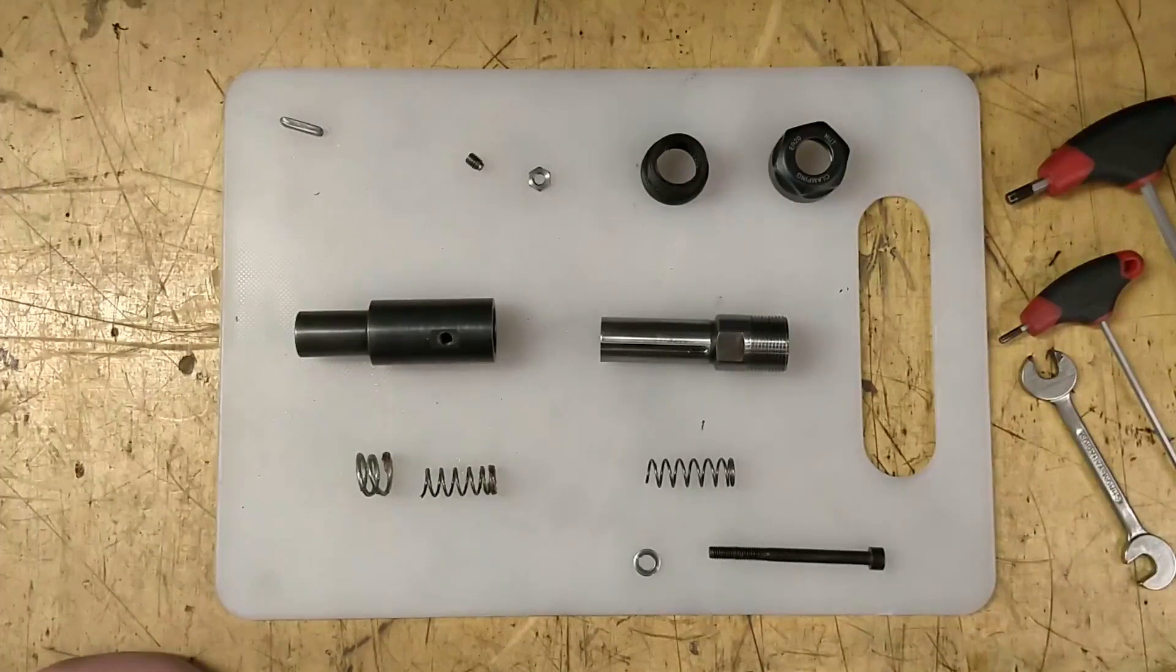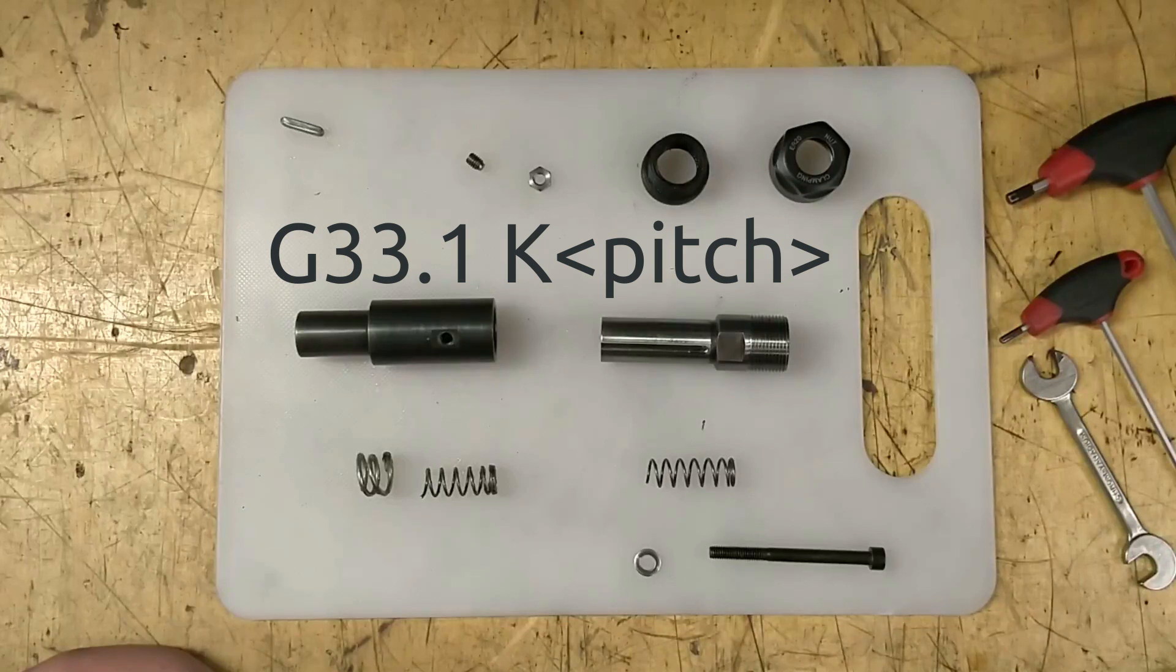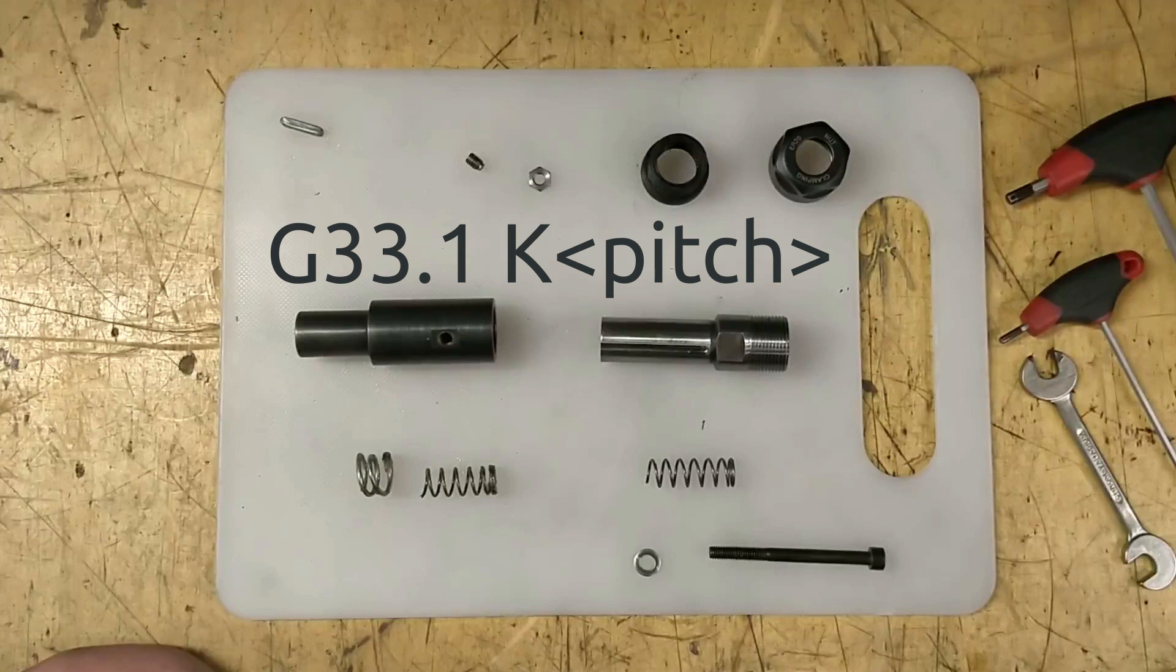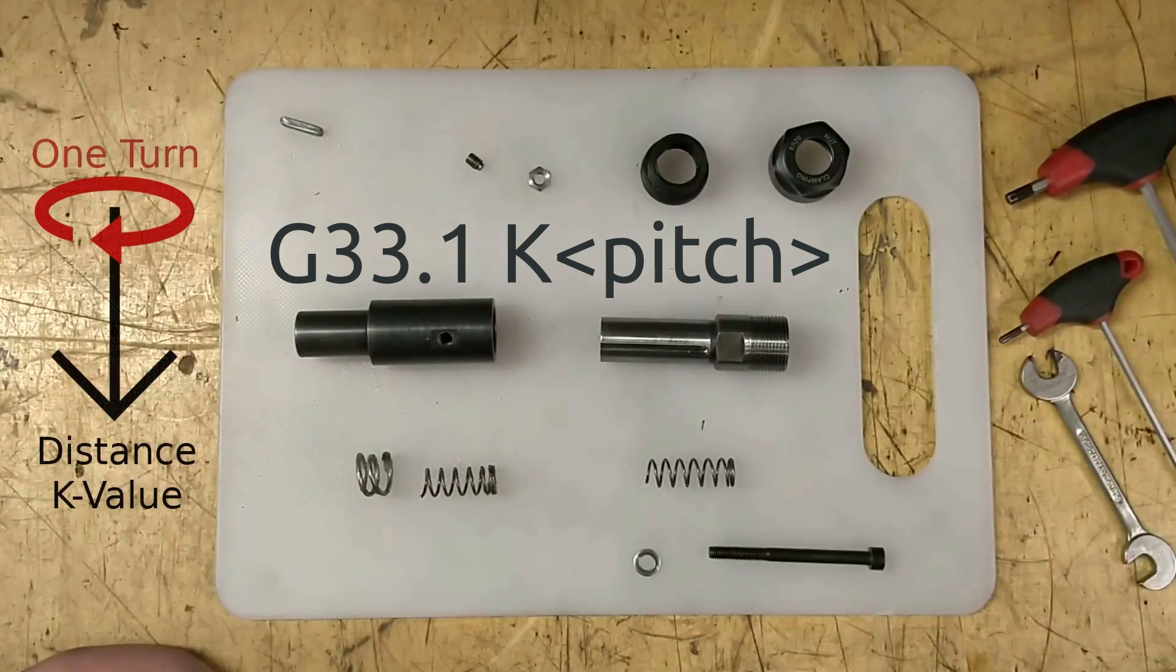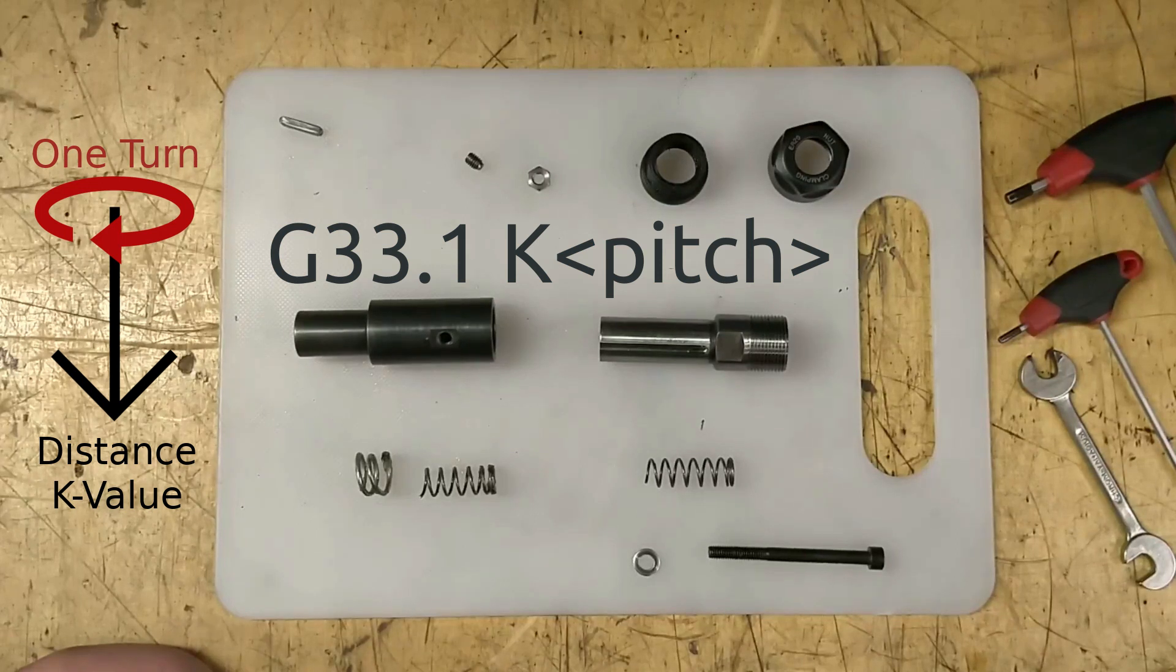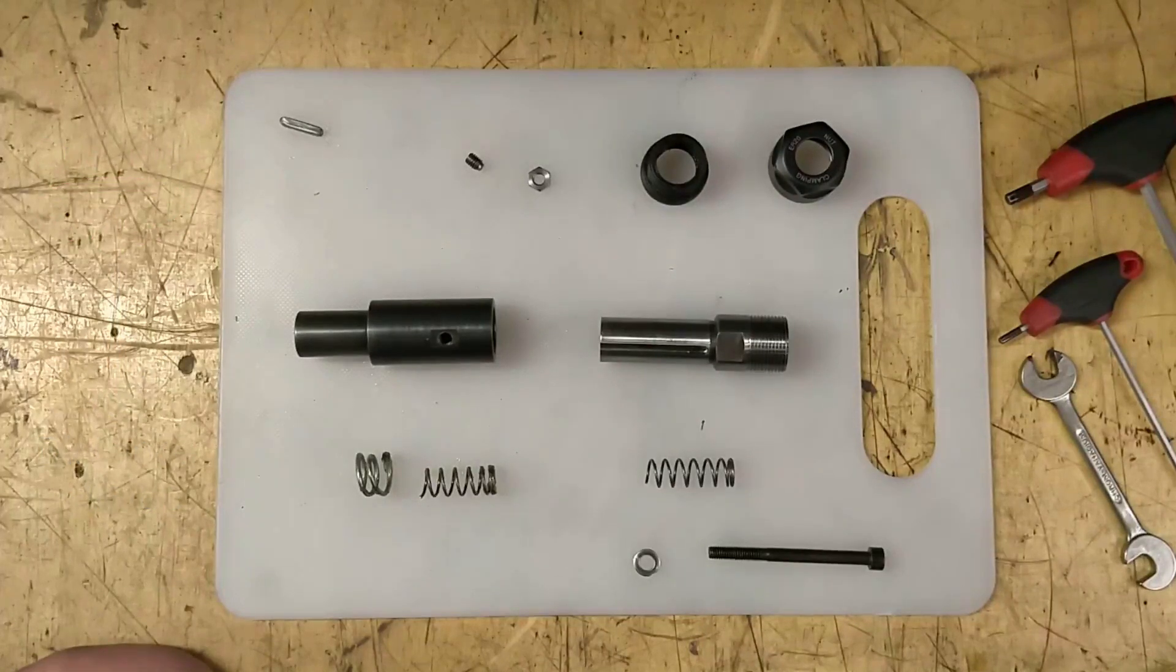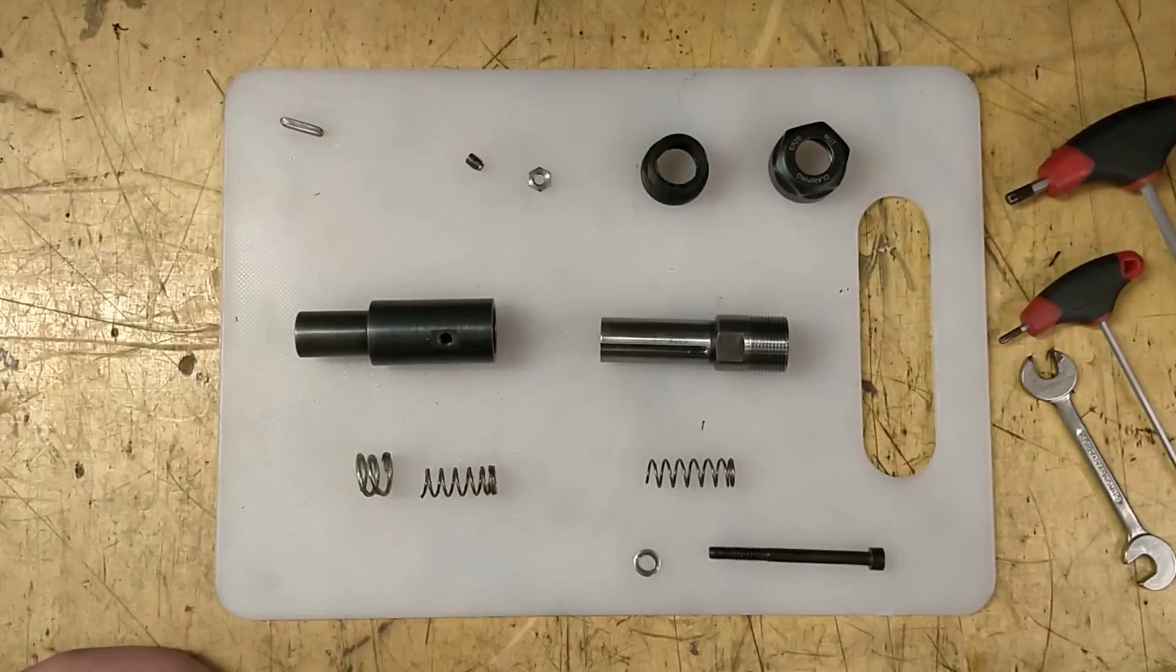There's a G-code for it, it's G33.1 which takes a K parameter. The K parameter specifies the amount of travel the Z axis will move for each spindle turn. That's what you use for rigid tapping, and the problem is if the encoder reading of the servo is not exactly the position of the spindle, this will break the tap.